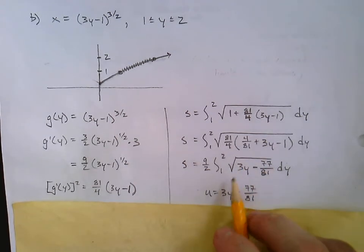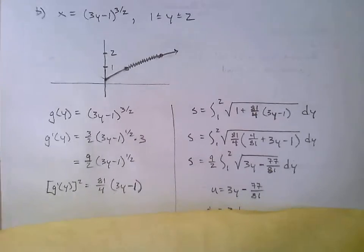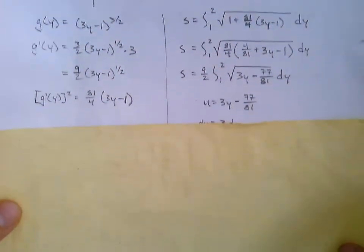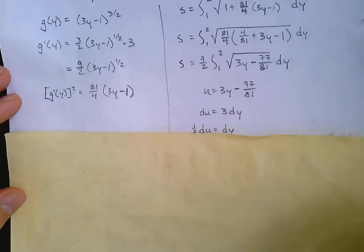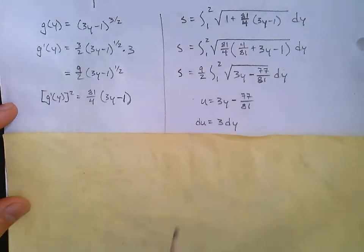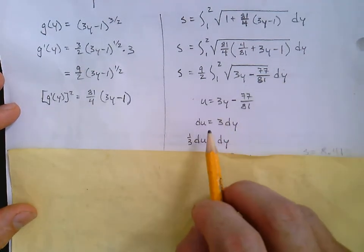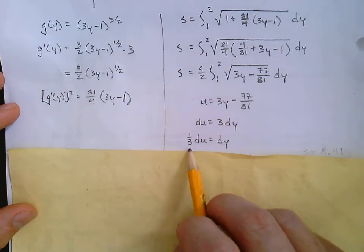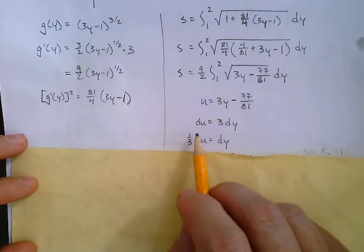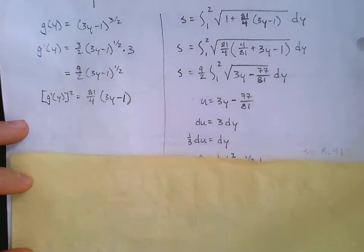We're just going to say what's inside that square root is u. u equals 3y minus 77 over 81. So du is simply 3 dy. For the dy there, I like to divide that 3 over, depending on how you learn u substitution. I'll think of it as 1 third du equals the dy.